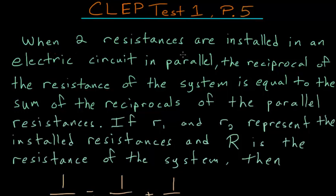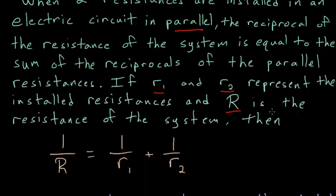When two resistances are installed in an electric circuit in parallel, the reciprocal of the resistance of the system is equal to the sum of the reciprocals of the parallel resistances. If R1 and R2 represent the installed resistances, and R is the resistance of the entire system, then we're given this equation: 1 over R equals 1 over R1 plus 1 over R2.